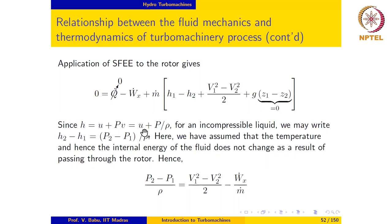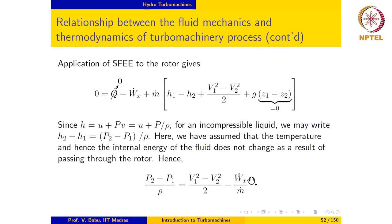This assumes the temperature of the fluid remains the same as it passes through the turbo machine — whether it is being pumped or passing through a hydraulic turbine — so there is no significant change in internal energy. Substituting and rearranging, we get (p₂ − p₁)/ρ = (V₁² − V₂²)/2 − Ẇₓ/ṁ, where Ẇₓ is the thermodynamic work rate, positive for a turbine and negative for a pump.